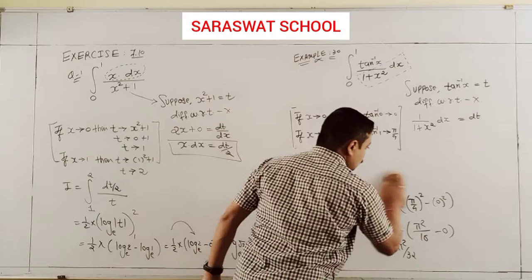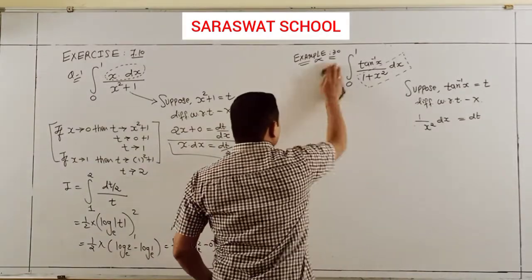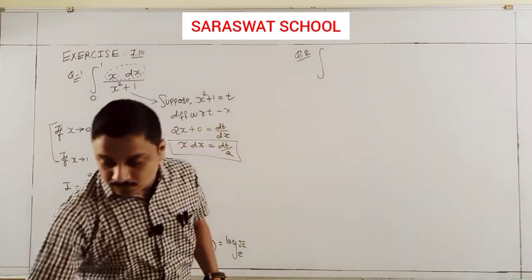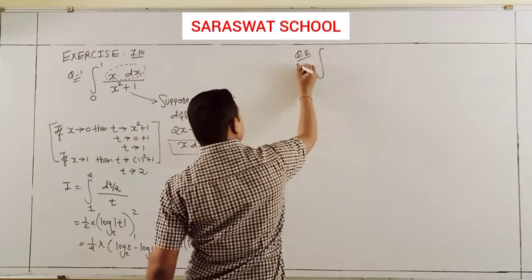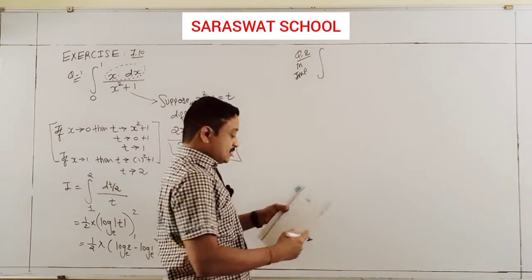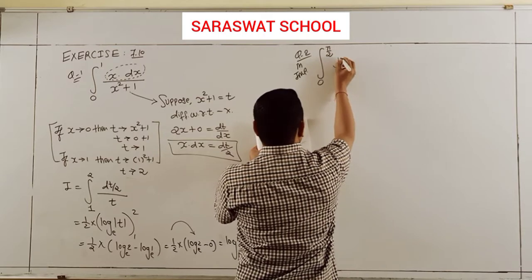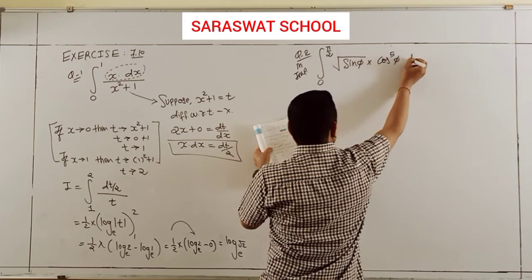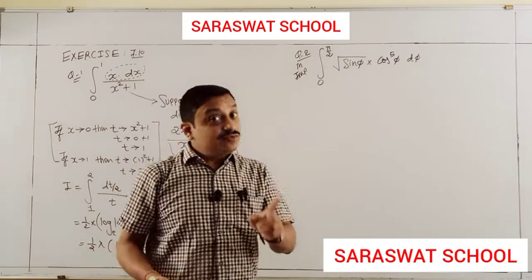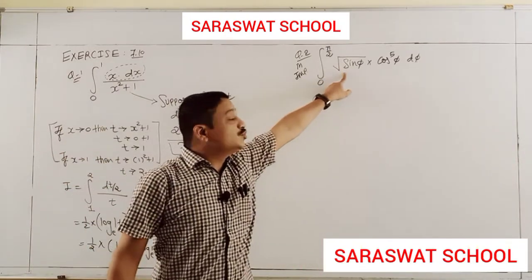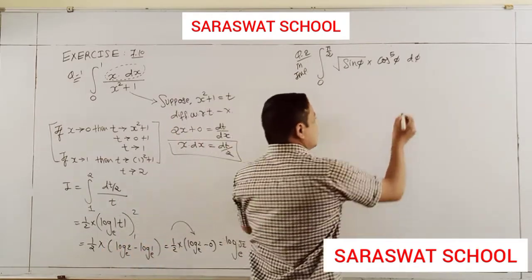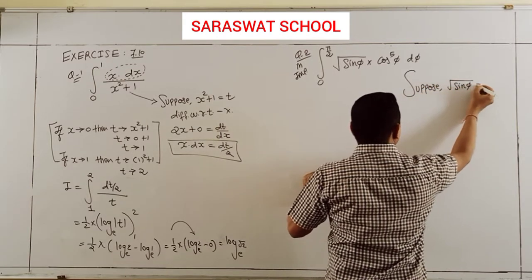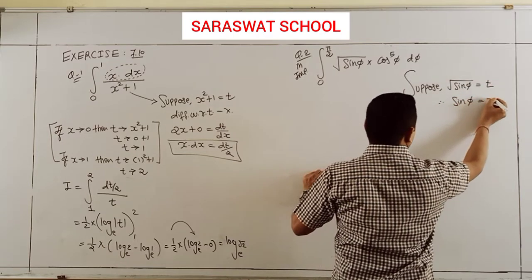Second question is exam-oriented. Integrate from 0 to π/2: √(sinφ) times cos⁵φ dφ. Here φ is the variable. Always for a root term, I assume that substitution. Suppose √(sinφ) equals t, so sinφ equals t².